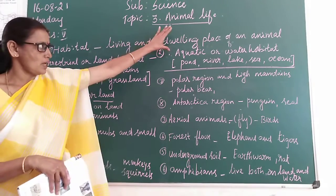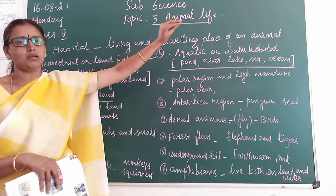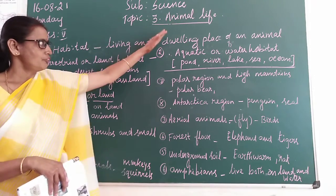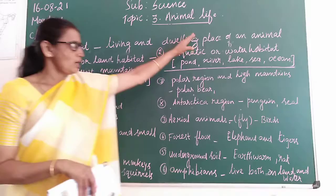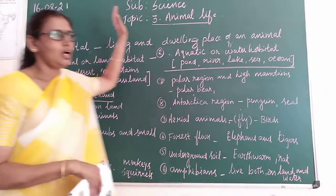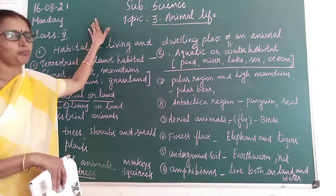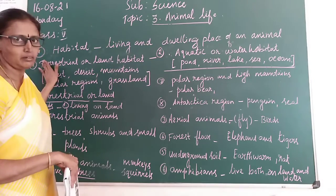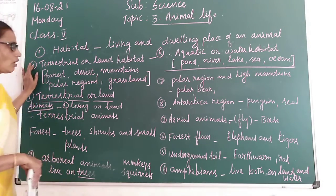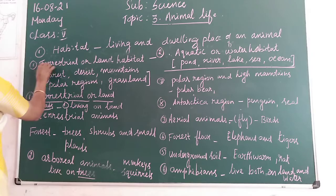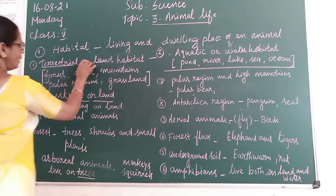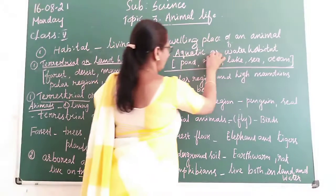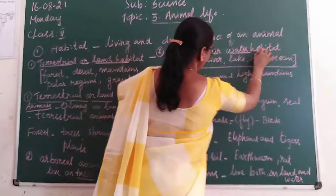The living and dwelling place of an animal is called habitat. There are two types of habitat children: one is terrestrial or land habitat, and the second one is aquatic or water habitat.